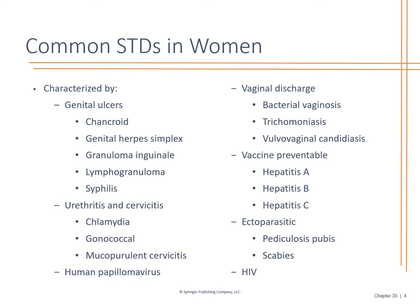Looking at vaginal discharge — bacterial vaginosis is a change in the pH of the vagina. This can very frequently happen after multiple sexual encounters, after antibiotics, or with urinary tract infections. Trichomoniasis requires doing a pelvic culture to see what's going on and assess the exposure. Candidiasis involves yeast; diabetics are at higher risk, and previous use of antibiotics also puts you at increased risk.